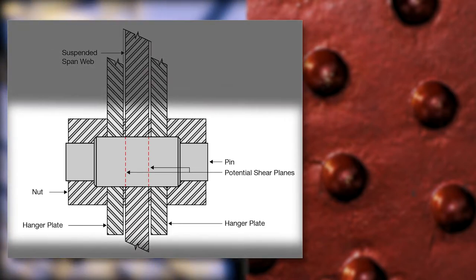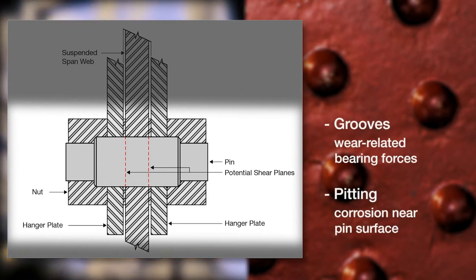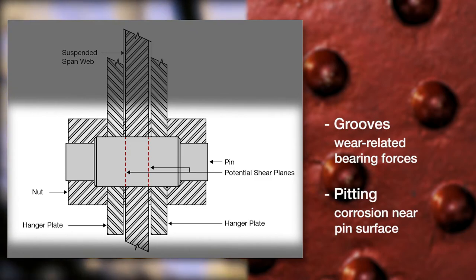Cracking in hanger pins typically occurs near the shear planes where the bridge spans meet. Other pin defects include grooves caused by wear-related bearing forces and pitting caused by corrosion near the pin surface.